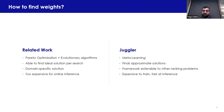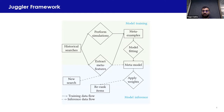The framework is divided into two components: model training and model inference. In model training, we generate the model by first performing simulation — we look at different sets of weights for a search and find out which is the best one. We also describe the search by extracting meta features to summarize its context. Once we have both, we create meta examples and fit a classification model to create the meta model. At inference time, a search is subjected to the same meta feature extraction process and we make predictions with new weights to re-rank items in real time.